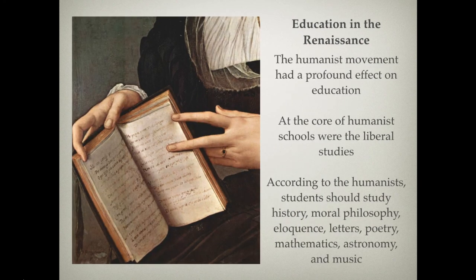Education in the Renaissance was also characterized by the humanist movement, which had a dramatic effect on universities and approaches to learning. At the core of this shift was humanist schools and a move toward liberal studies. According to the humanists, students should study history, moral philosophy, eloquence, letters, poetry, mathematics, astronomy, and music — a huge shift away from the medieval emphasis.